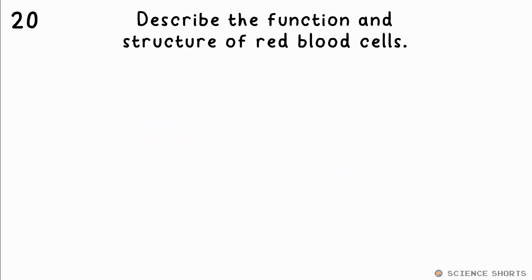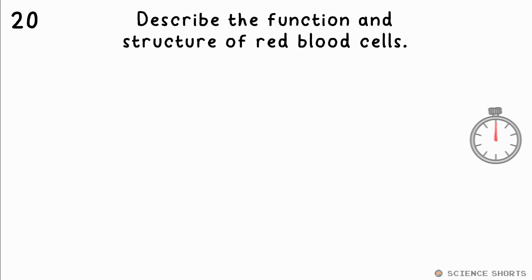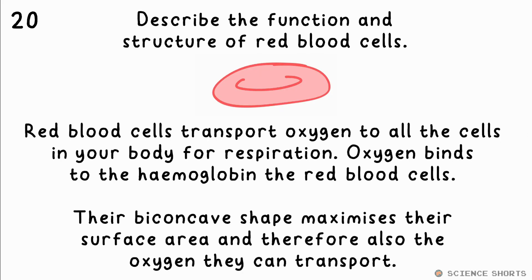Question 20. Describe the structure and function of red blood cells. Red blood cells transport oxygen around the body via the bloodstream, as oxygen binds to the haemoglobin inside of them. Their biconcave shape maximises the surface area the oxygen can bind to.